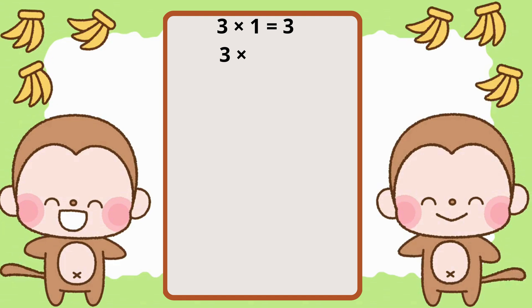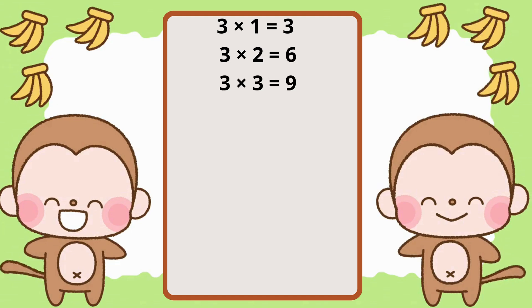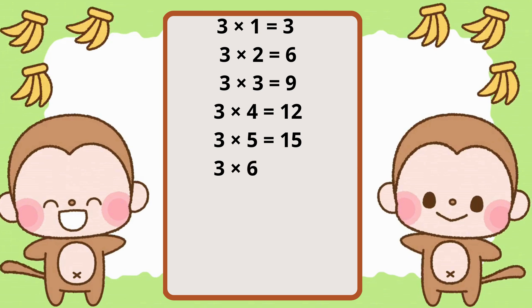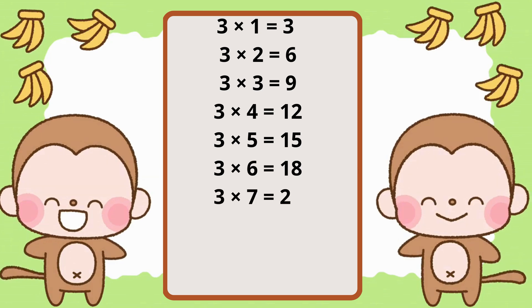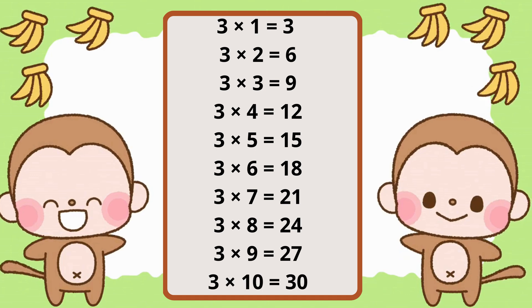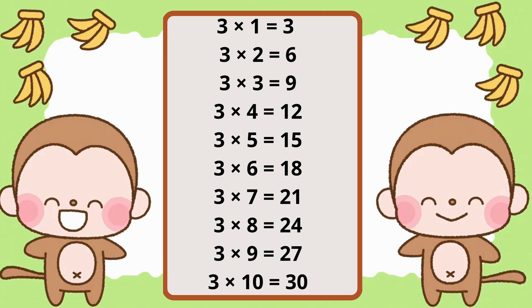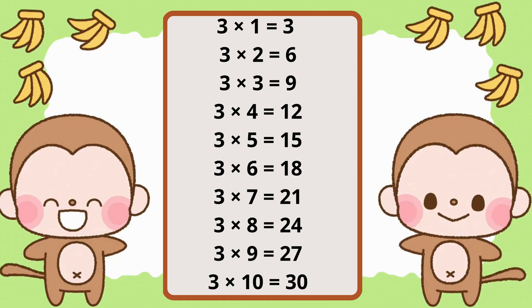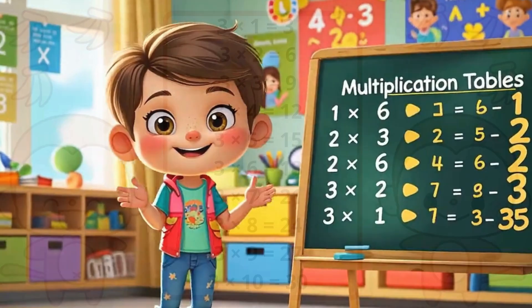3 times 1 is 3, 3 times 2 is 6, 3 times 3 is 9, 3 times 4 is 12, 3 times 5 is 15, 3 times 6 is 18, 3 times 7 is 21, 3 times 8 is 24, 3 times 9 is 24, 3 times 10 is 30!